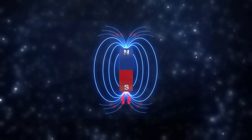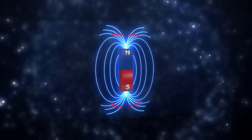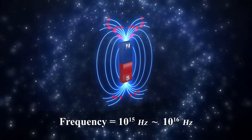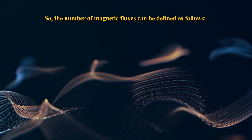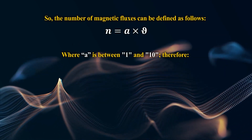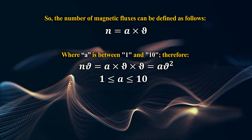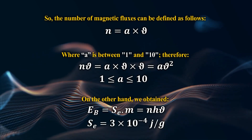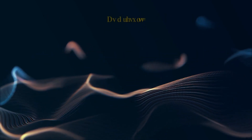So the number of magnetic fluxes N can be defined as follows. We will study the dependency of magnetic frequency ν and the number of magnetic fluxes N on mass. As was mentioned before, the frequency will remain in the range of 10 to the power of 15 to 10 to the power of 16 Hz. The number of magnetic fluxes N can be defined as follows, where A is between 1 and 10. On the other hand, we obtained a related expression, and as a result the number of magnetic fluxes N can be defined accordingly.